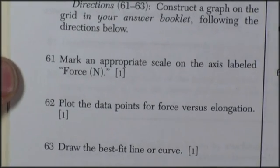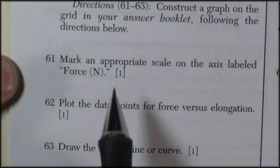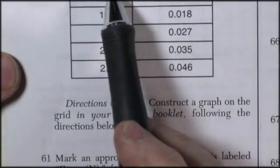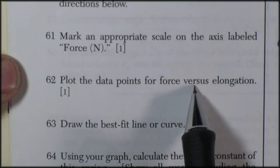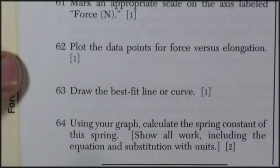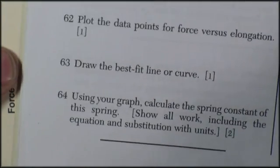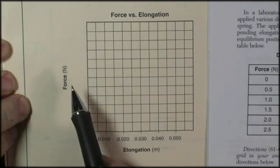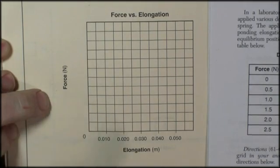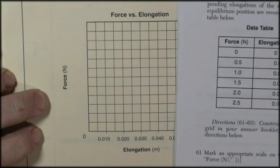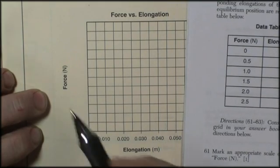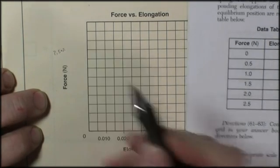We have to mark an appropriate scale on the axis for force in newtons, which means we're going to have to include on our graph from zero up to about 2.5 newtons. We've got to plot the data points from this graph, and then we have to draw a best fit curve. So let's look at the graph we have to work with. They want us to scale the force axis. They've already given us the elongation axis, and it's already numbered, so we're pretty well set. We look at our data, and we've got to go from zero to 2.5.